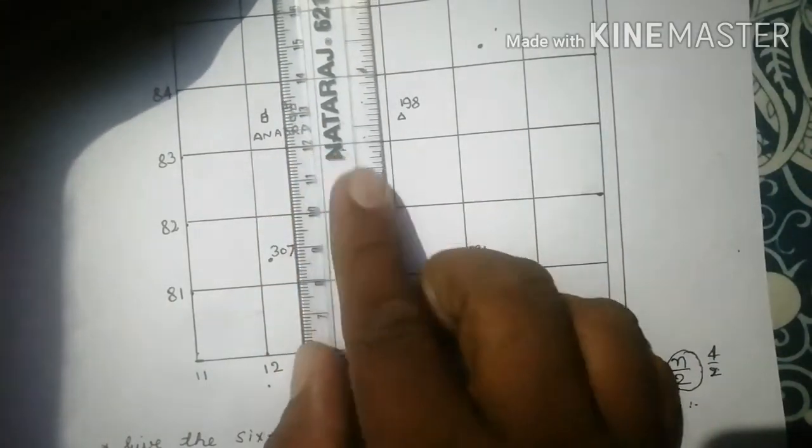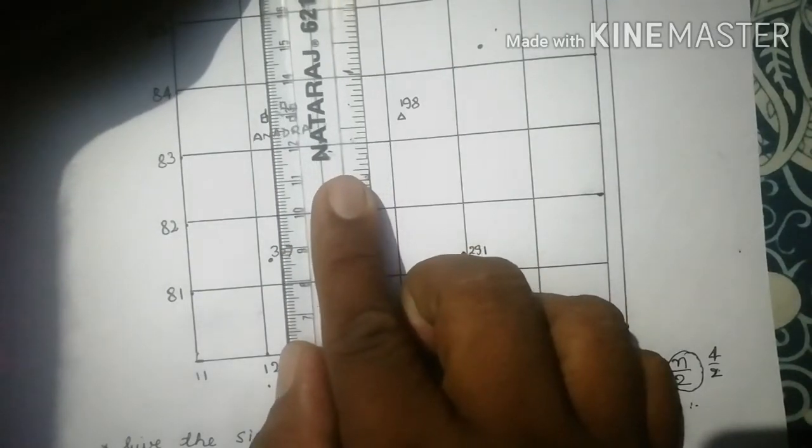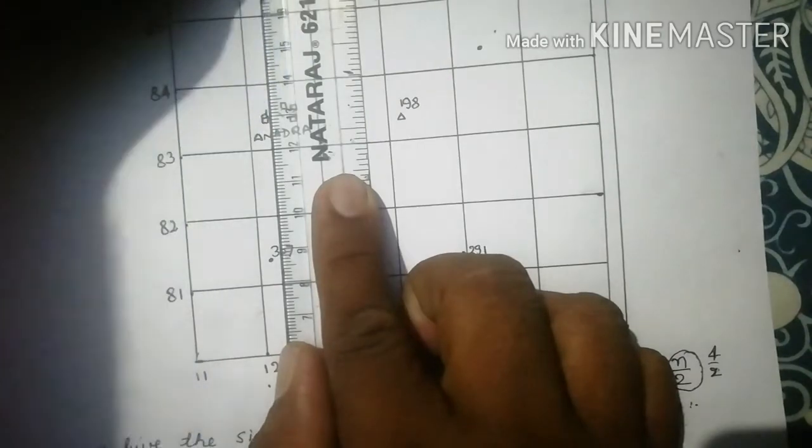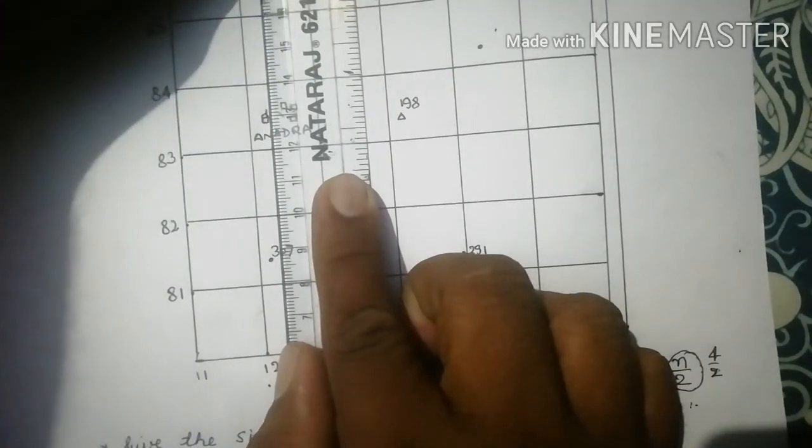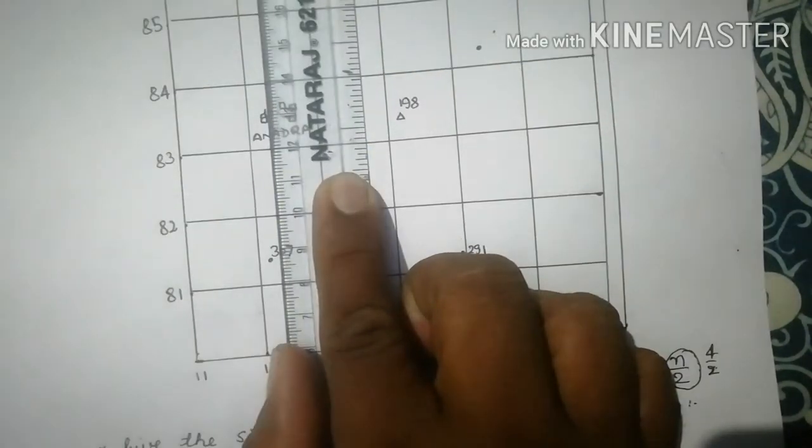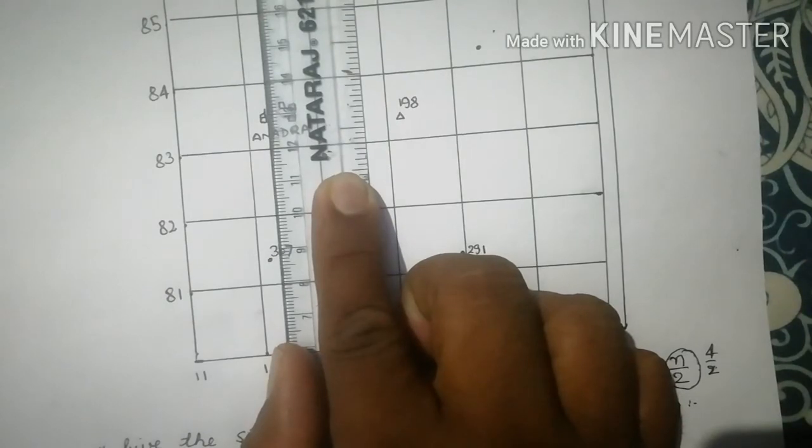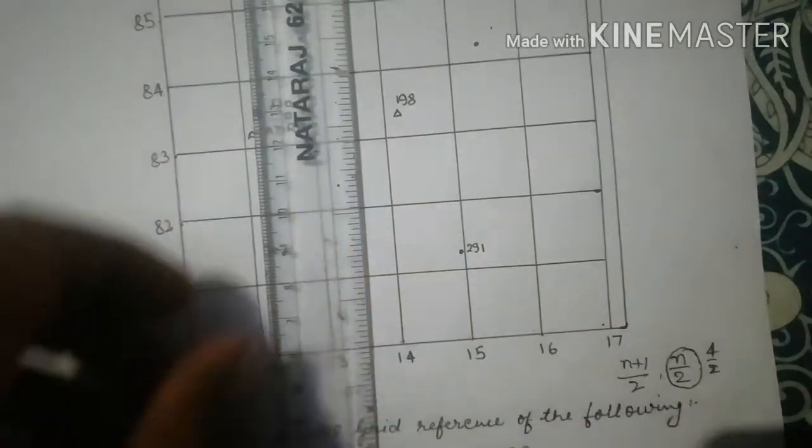We will again check which particular line is crossing. The line number, the division number 11 is actually crossing in my point of view. If I'm not wrong, don't worry if you have a slight difference. It might be 11, it might be 10 also. It is acceptable, you don't have to panic about it.